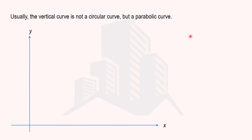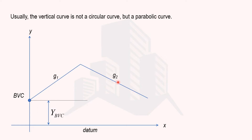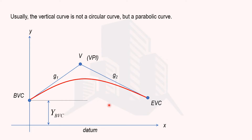Let's set up the coordinate system with an x-axis and y-axis. The beginning point of the vertical curve (BVC) is placed on the y-axis. The x-axis is the datum — typically the BVC level, which is where we take the reduced level. The vertical distance measured from the datum gives the reduced level of BVC. We consider G1 and G2 gradients forming a crest curve. The meeting point of gradients is represented as V or VPI, and the end point is EVC. The horizontal distance from BVC to EVC is the length of the vertical curve.